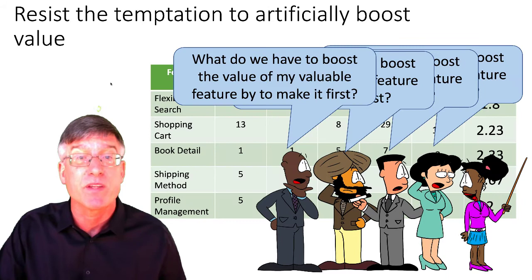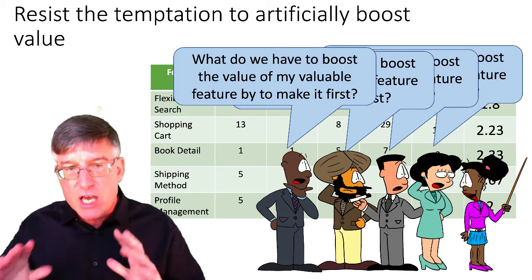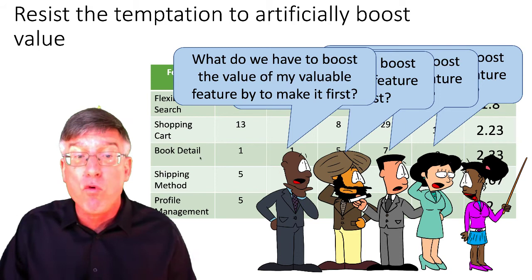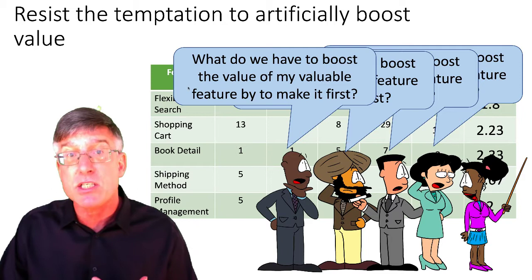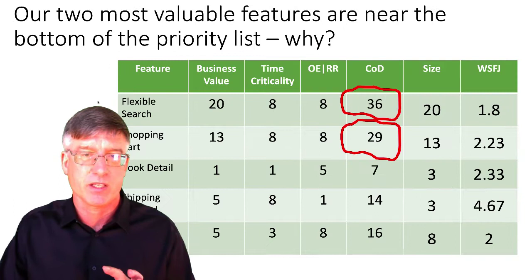So what do you do? This is the first temptation — everybody's going to say, what do I have to do to boost the value of my valuable feature to make it first? But if we went about this correctly and in a disciplined manner — using planning poker, having our conversations — then the relative values we established for each feature should be reasonable. So goosing the value just to make it first is really saying you're going to ignore what this is telling you about the economic outcomes and just make a fiat choice. Resist this.